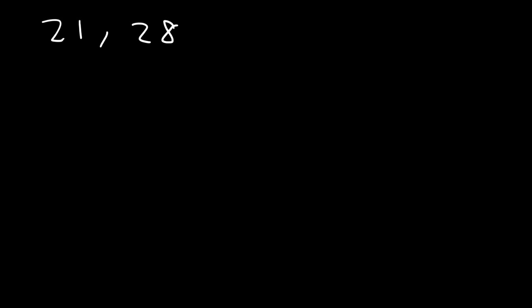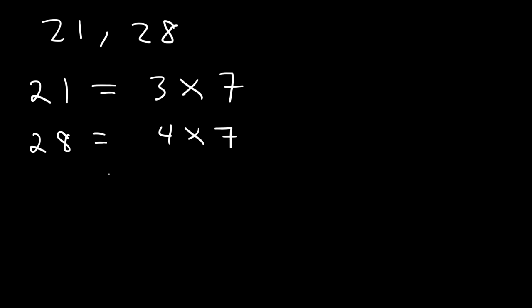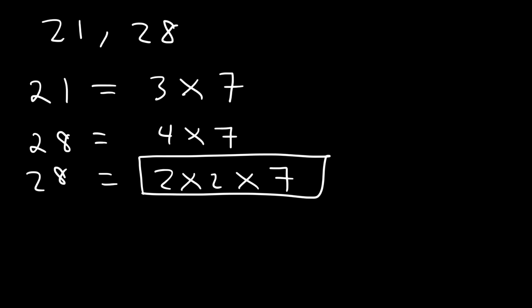Now, let's try another example for the sake of practice. What is the greatest common factor of 21 and 28? Let's write out the factors of 21. 21 is 3 times 7 — that's the prime factorization of 21. 28 is 4 times 7, and 4 can be broken down into 2 times 2. So, that's the prime factorization of 28. Notice that 7 is a common factor between 21 and 28 — in fact, it's the greatest common factor. So, the GCF between 21 and 28 is 7.